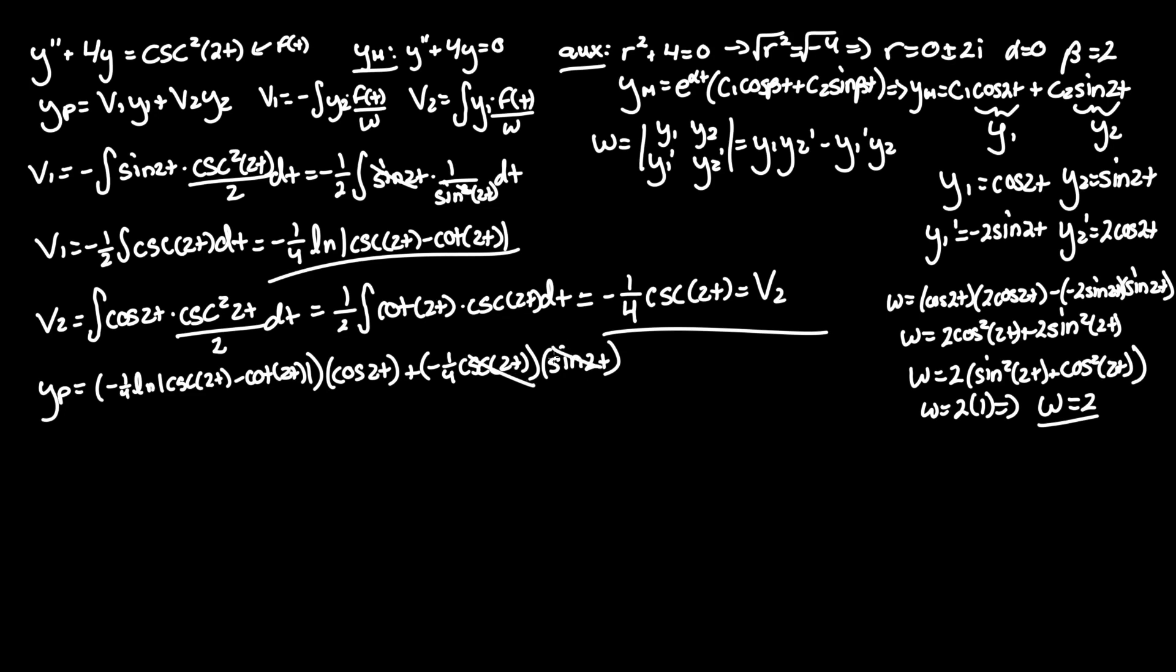And look at that, the sine and cosecant terms cancel, but everything here stays the same. So let's write what's left. And we get negative one fourth—don't forget to multiply cosine of 2t by this whole term—so ln absolute value of cosecant of 2t minus cotangent of 2t minus this remaining one fourth. And that is our y particular.